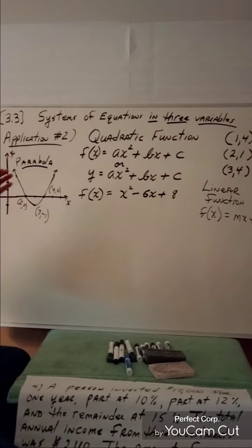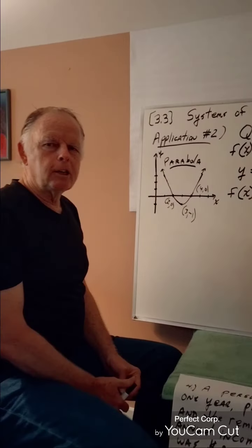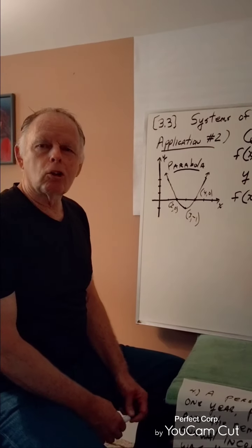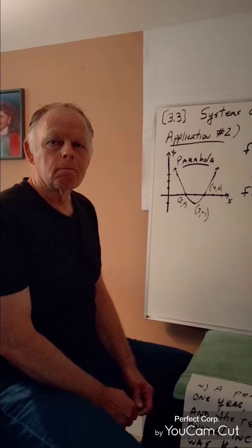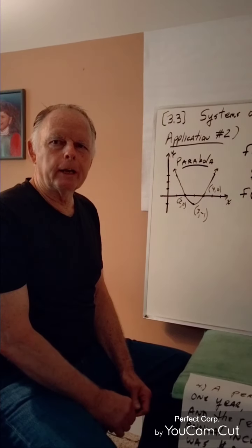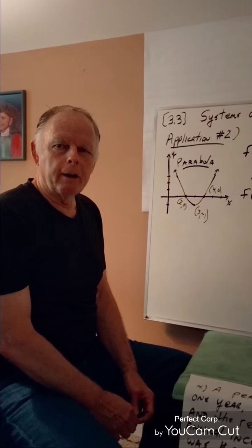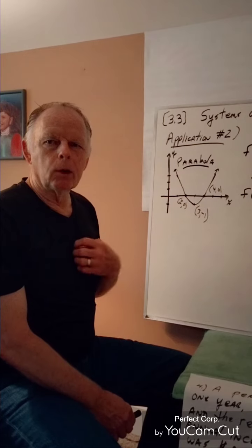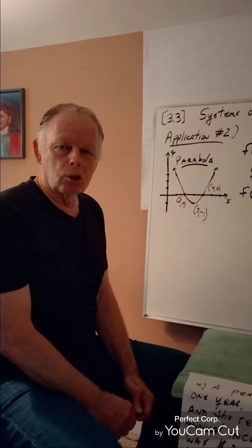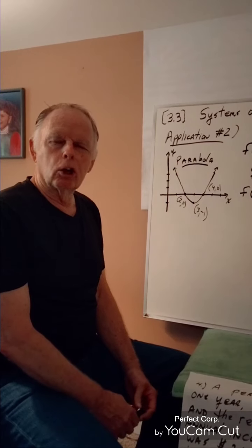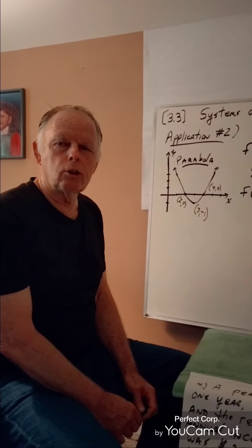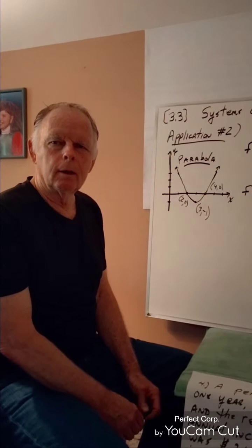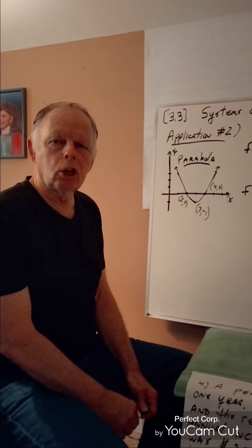In section 3.3 we're going to look at another kind of function called a quadratic function. It's called quadratic because one of its major terms is a quadratic term — that is, the variable x being taken to the second power. The squared term is the quadratic term.